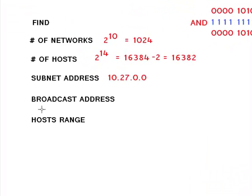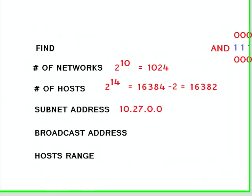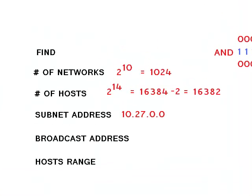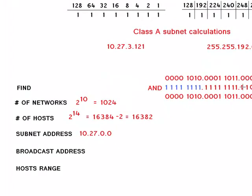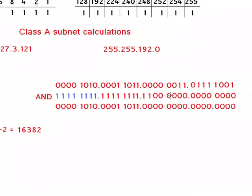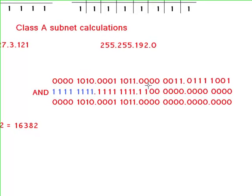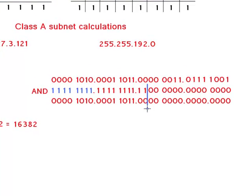To do a broadcast address, broadcast address which means everything ends in basically in ones, we need to find where the boundary is for our mask. So let me use a different line. You can see this is the mask, and the end of the mask is right here. So when you draw a line in here, this is the end of the boundary.